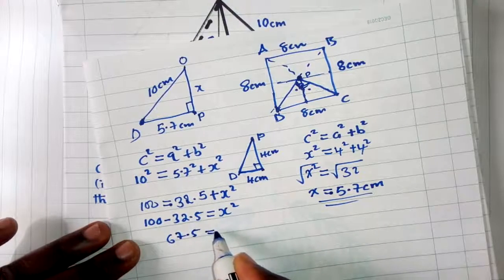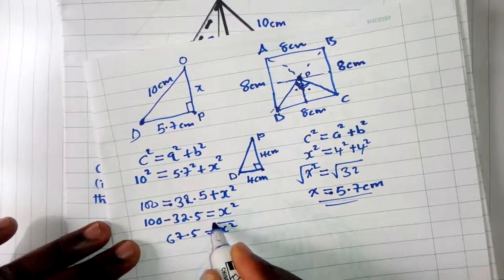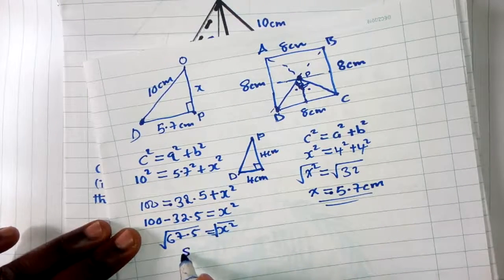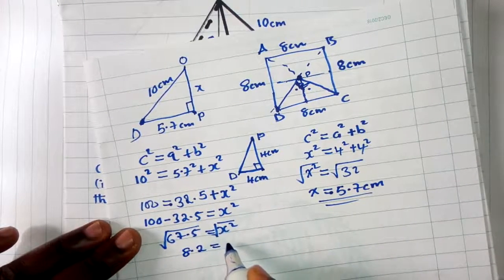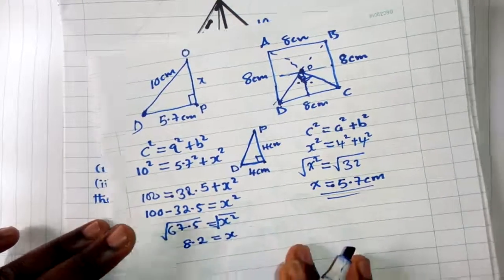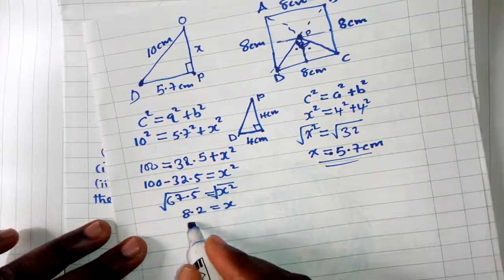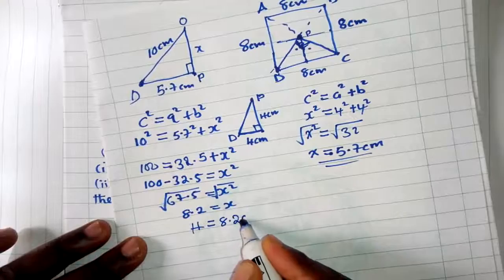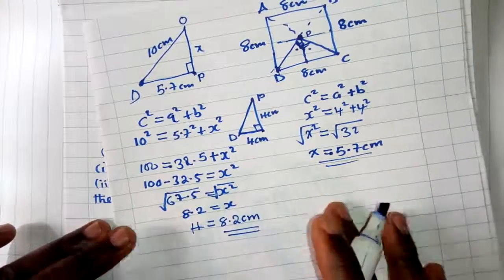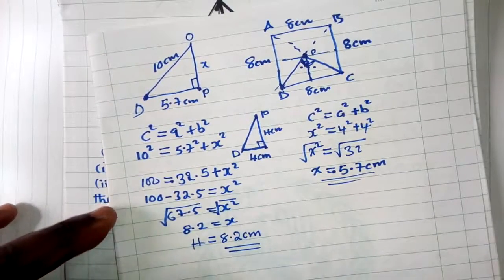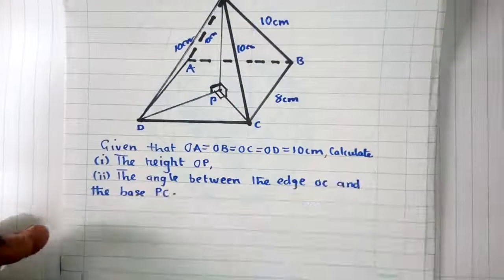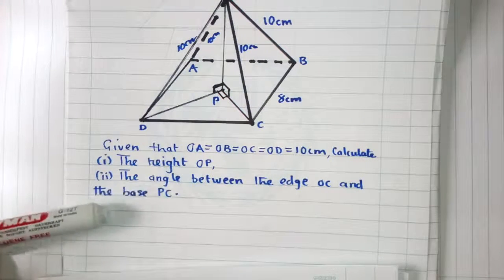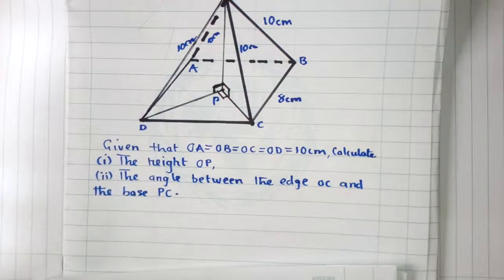Rearranging: h² = 100 − 32.5 = 67.5. Taking the square root: h = 8.2. So the height OP = 8.2 centimeters. Thank you, we're done with question one. For question two, watch the next video where we will show you how to answer it.